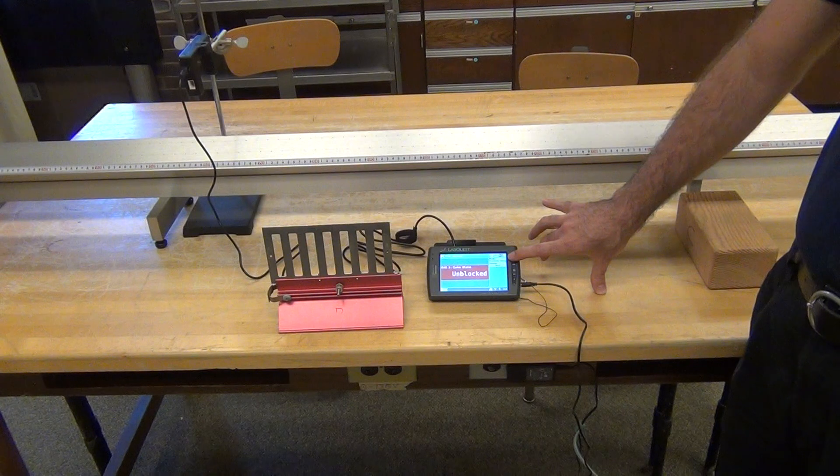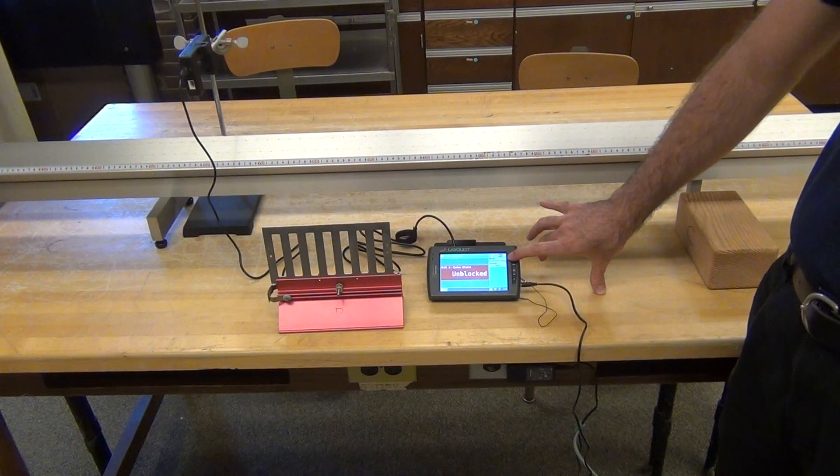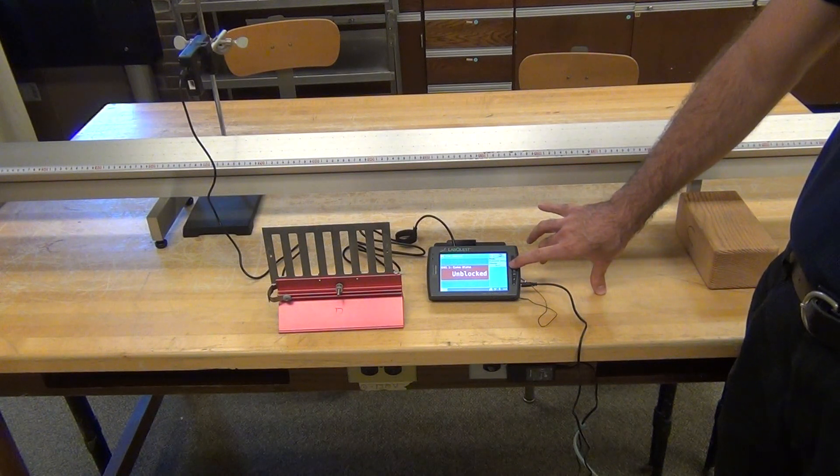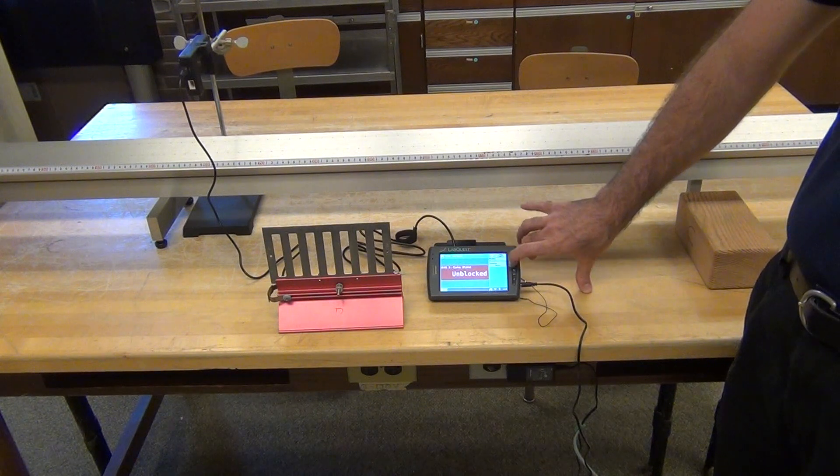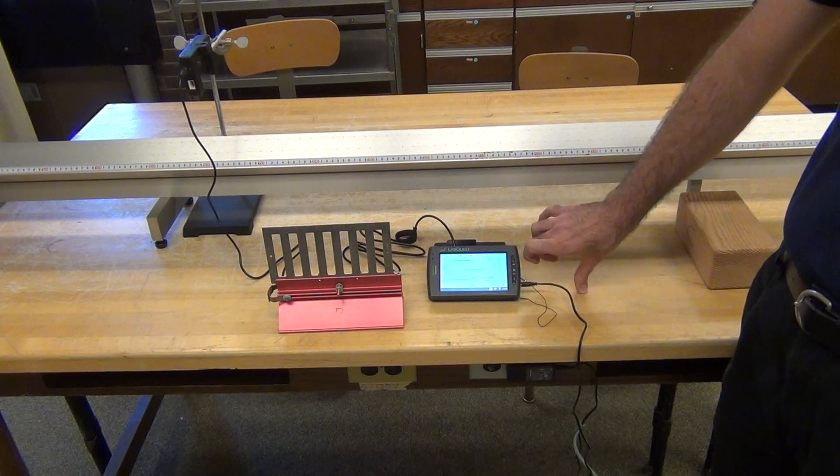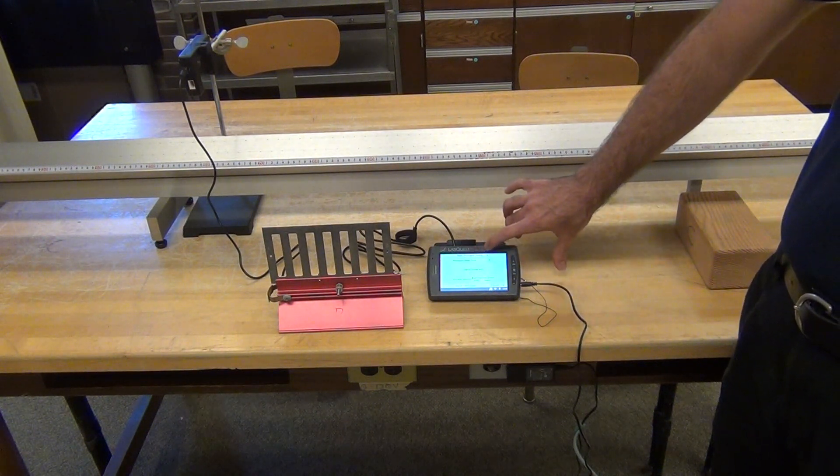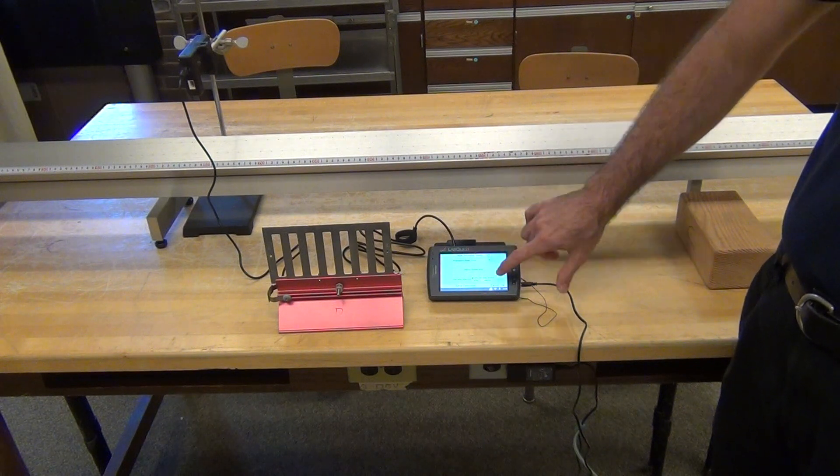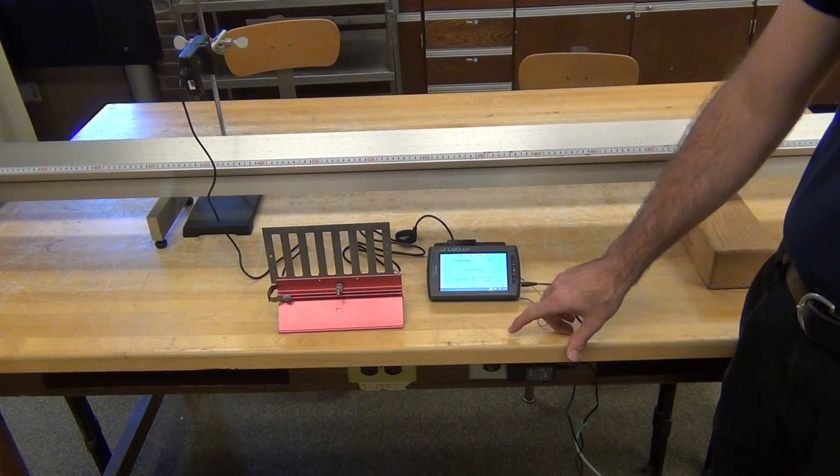I want to be in Photogate Timing Mode and Timing None. Now if I need to, I can adjust that by tapping there. Mode Photogate Timing, Photogate Mode None. Stop data with the stop button.